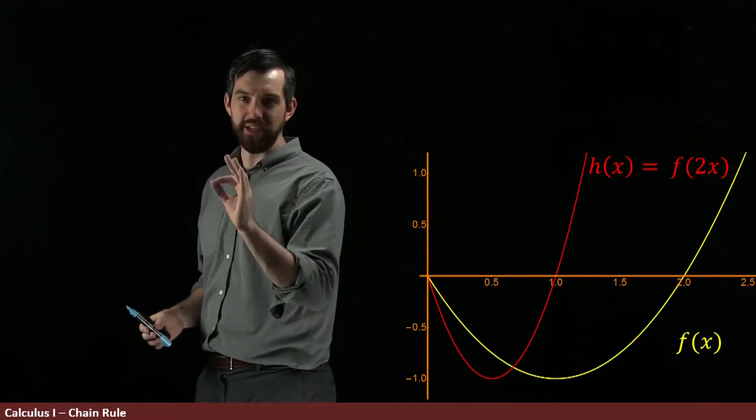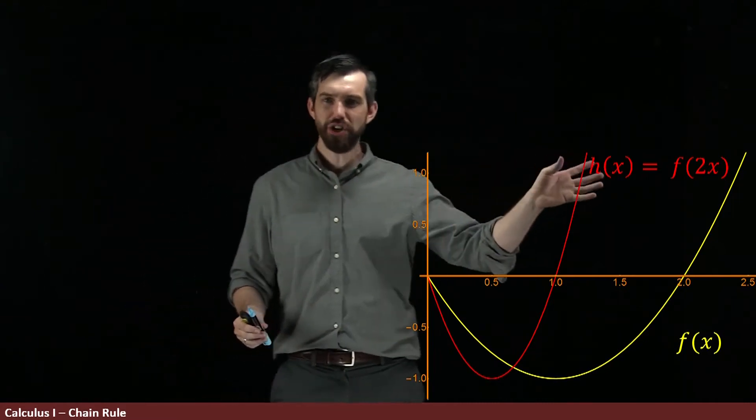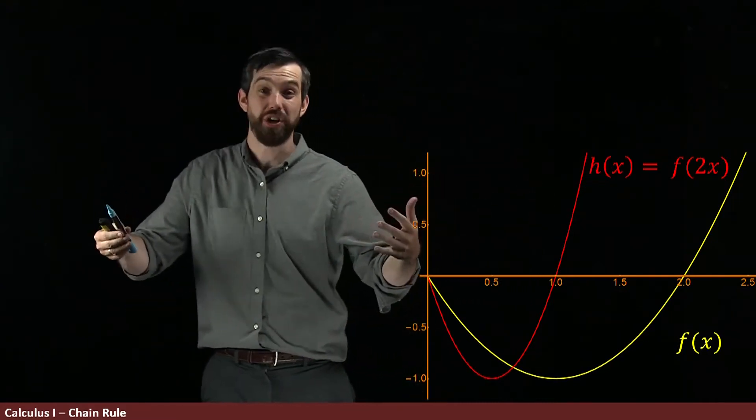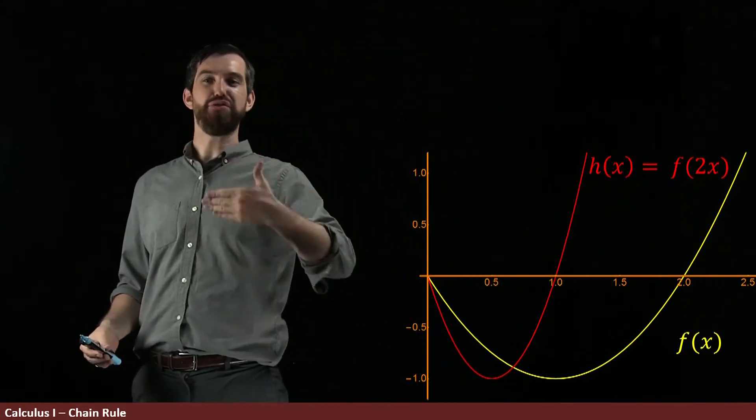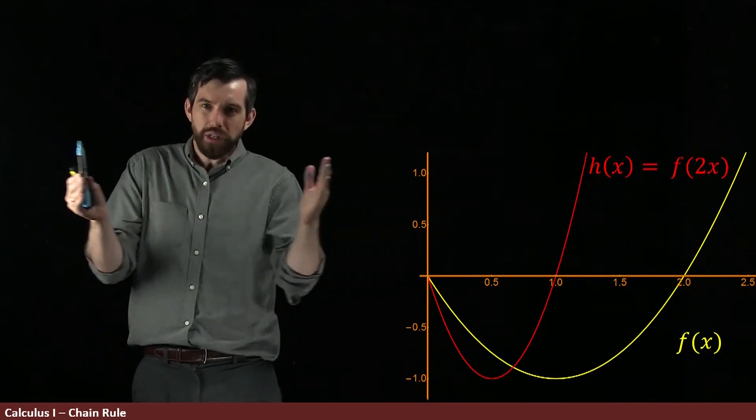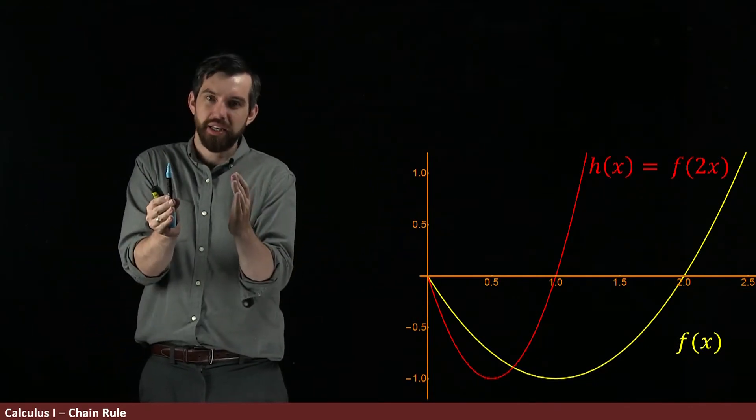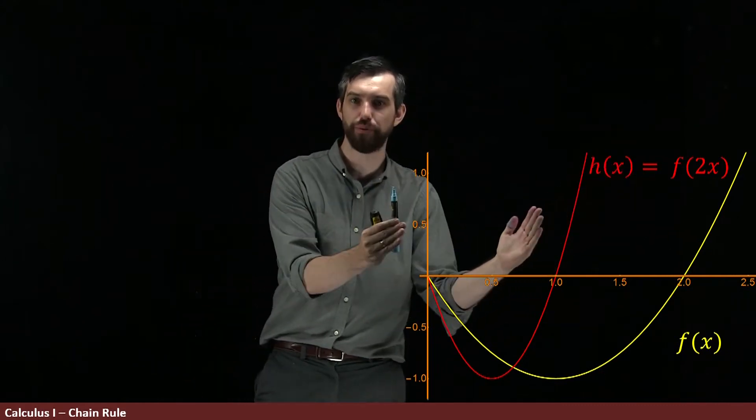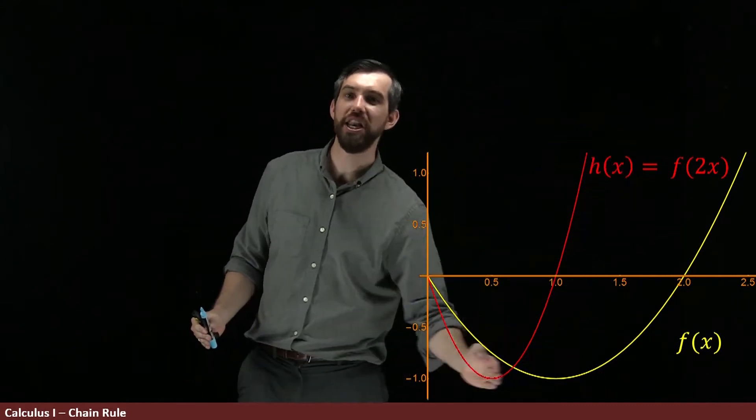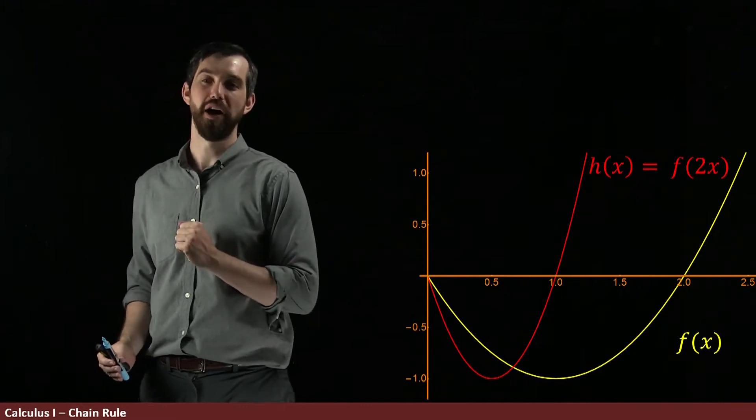And the second is going to be this function h of x that's a composition. It's f of 2x. And what taking f of 2x does is it horizontally compresses the function f of x. So the wider bottom parabola gets compressed down into this narrower parabola f of 2x.